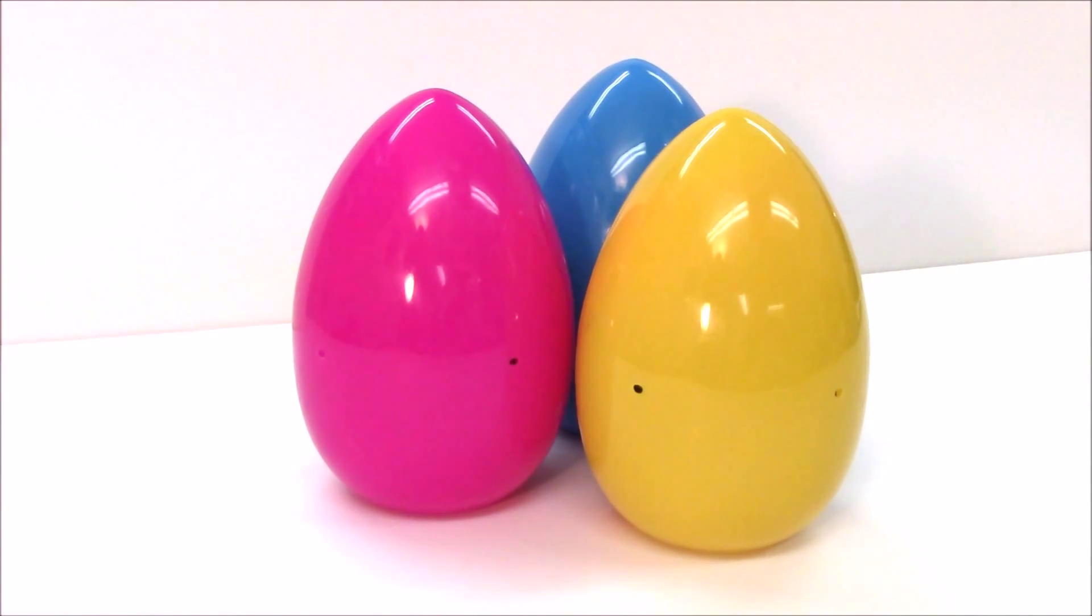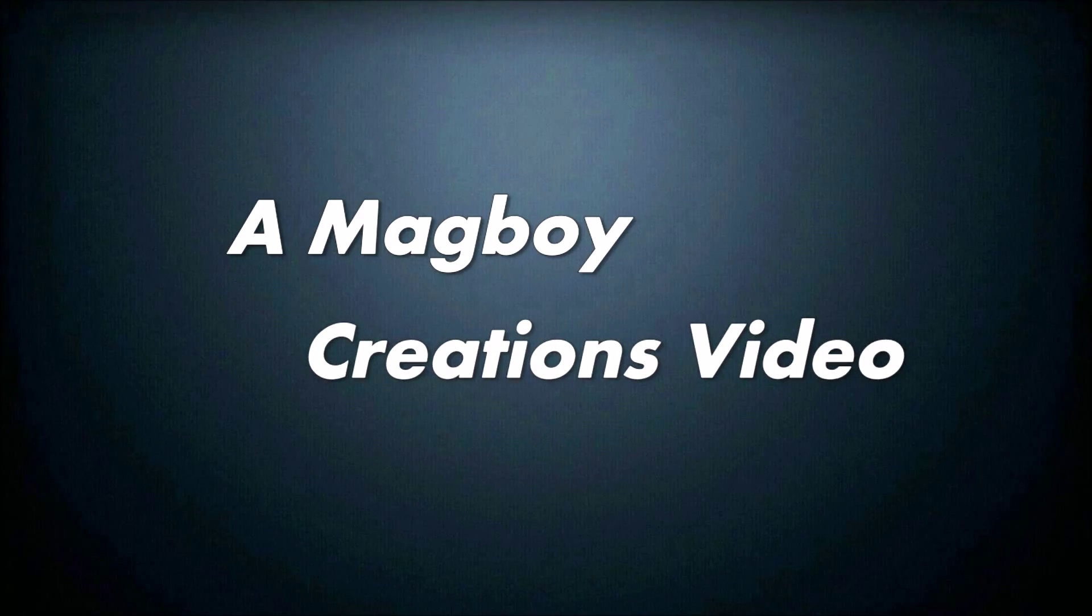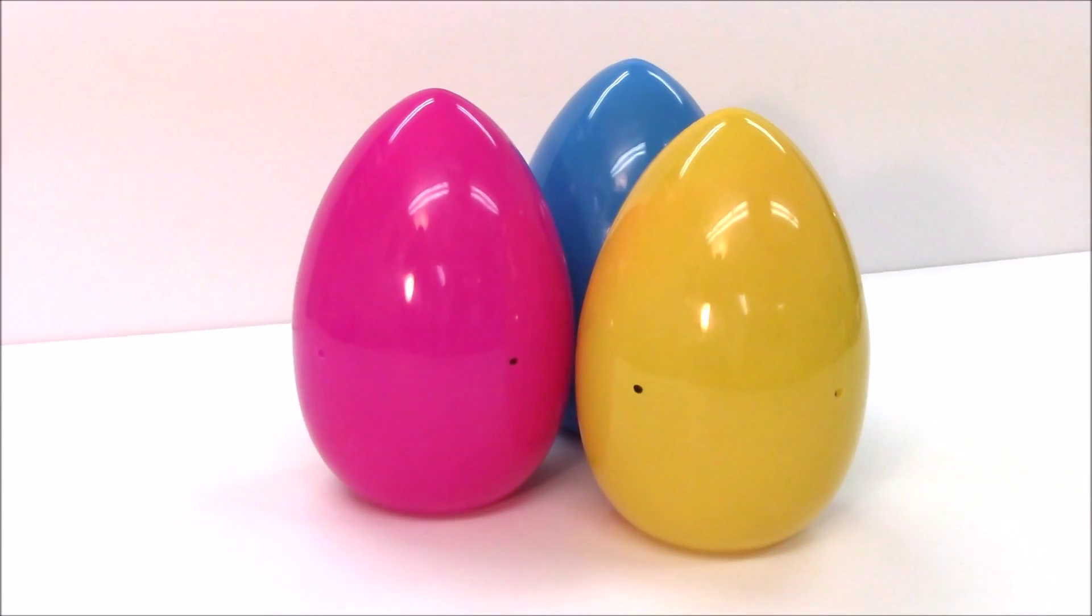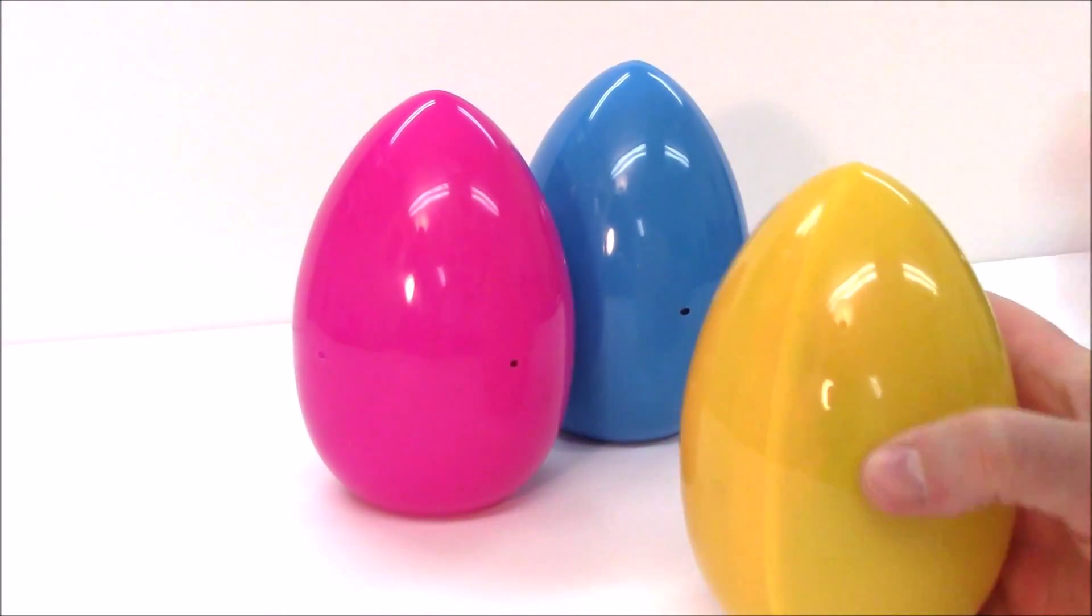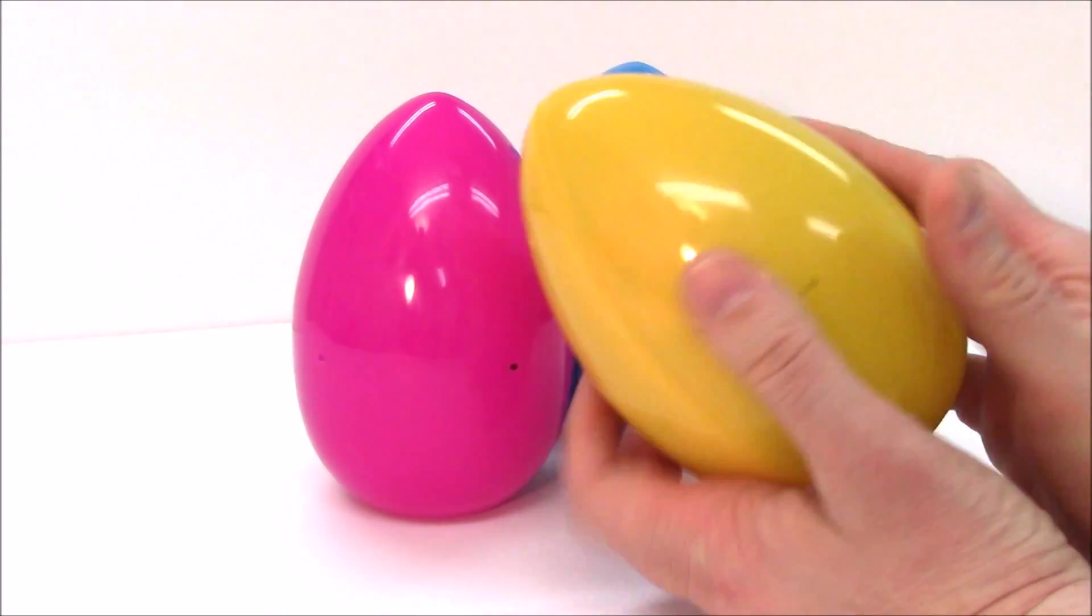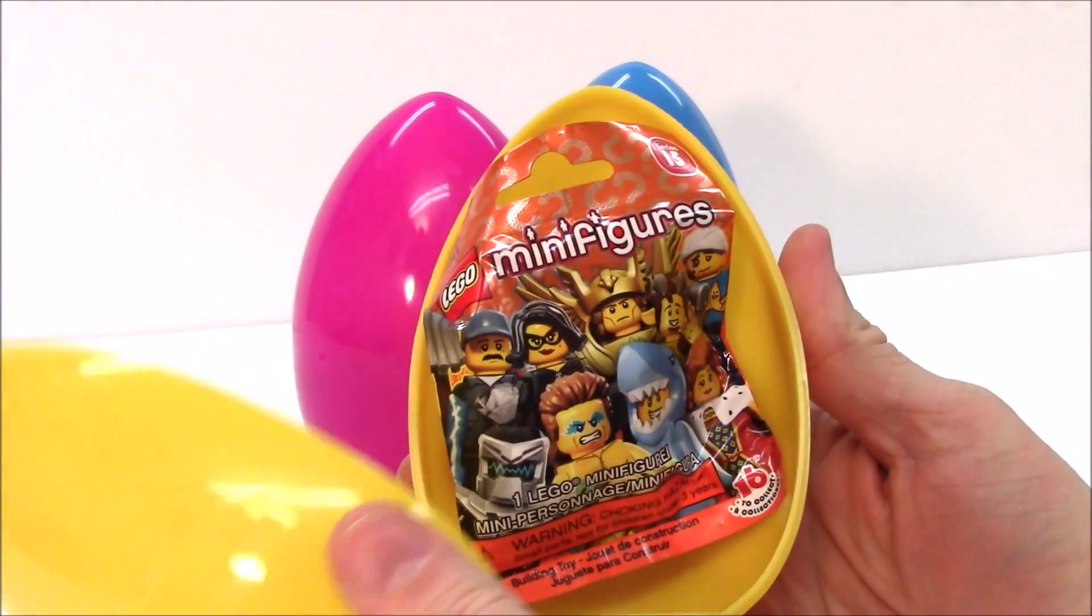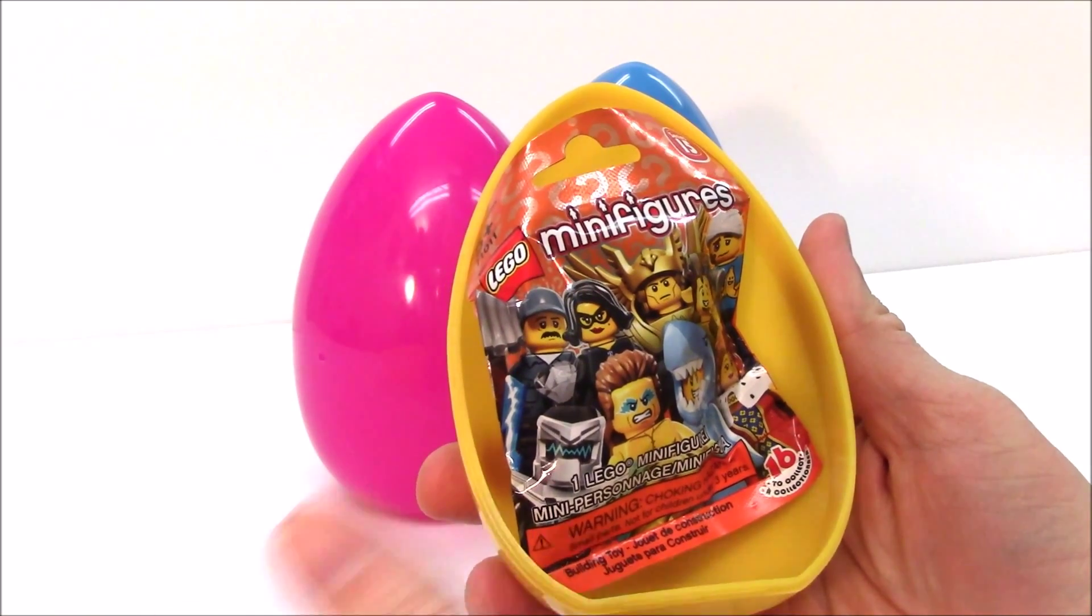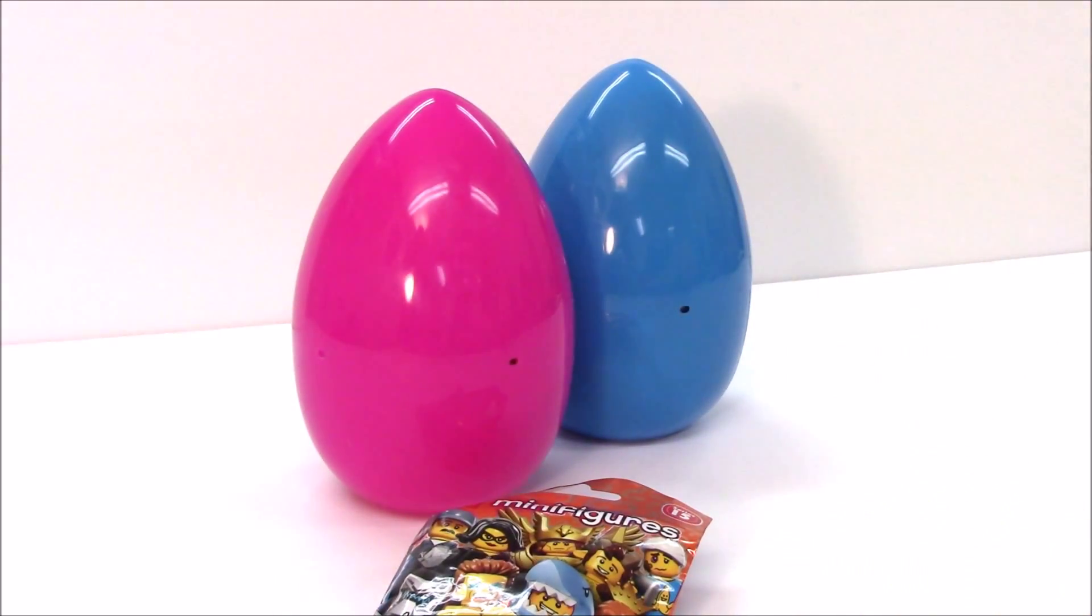Can I say LEGO my Eggo? All right, we're gonna start with the one in the front, the yellow one. Let's open this up and see what we have. Oh, I'm so excited I can't wait to see what it is. It is minifigures series 15. This is one of the new ones. That is awesome. We're gonna open that bag up in a minute, find out which character we got. Let's put this yellow egg off to the side.